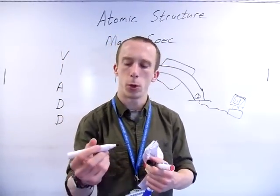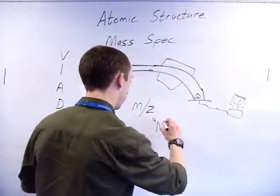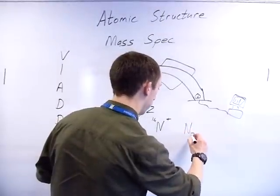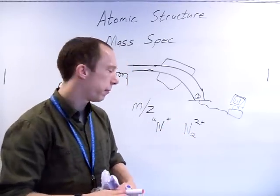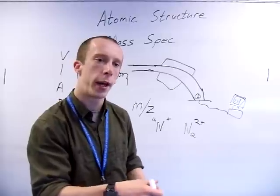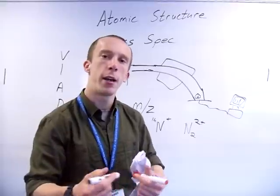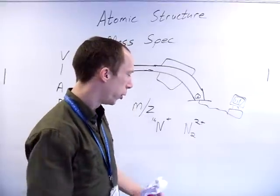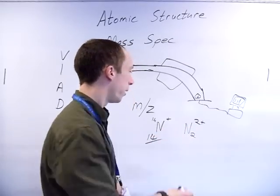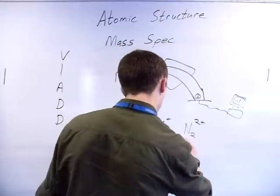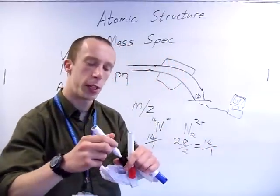A couple of questions people always get confused about. If you have a single nitrogen atom, positively charged, and a nitrogen molecule N₂ - assuming they're both N-14 isotopes - with a two-plus charge overall, can a mass spec tell the difference between them? No. Mass to charge for the atom: 14 over 1. Mass to charge for the molecule: 28 over 2, which is the same as 14 over 1.